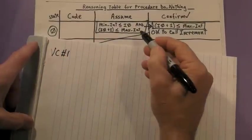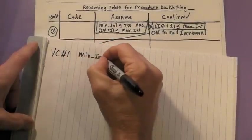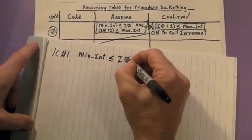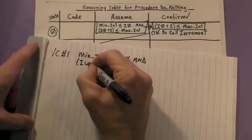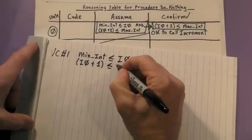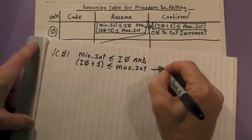For VC number 1, we're going to look at state 0 in the reasoning table. First, we're going to write down all the premises from the assume column, followed by the implication symbol. Then, we're going to write down the conclusion from the confirm column.